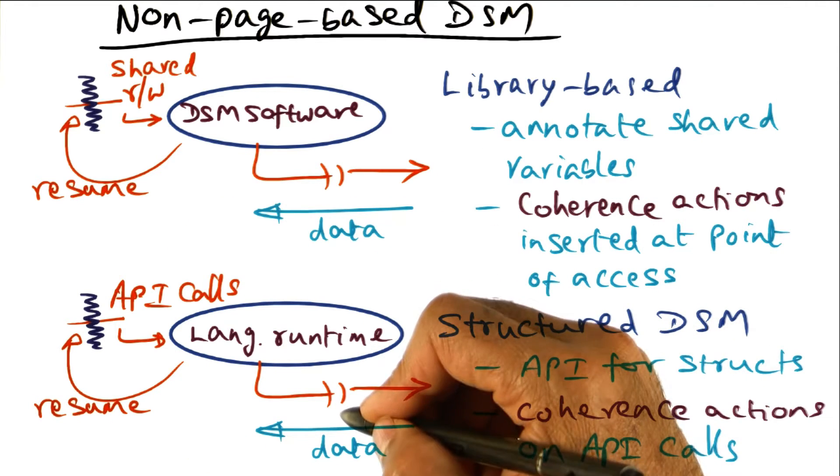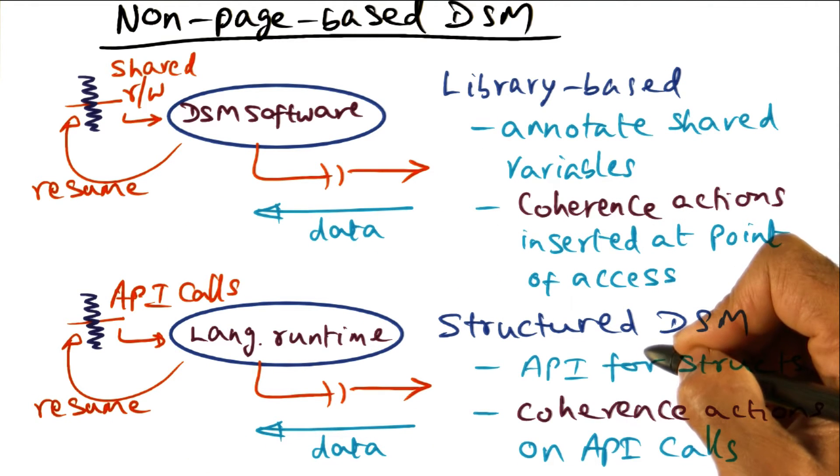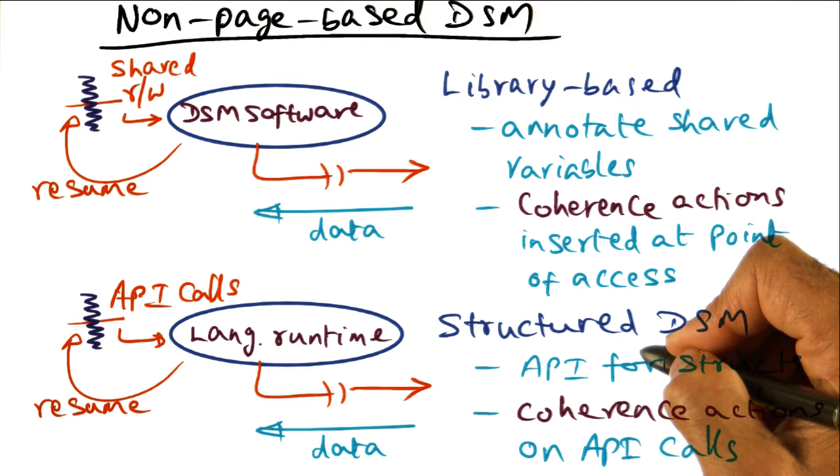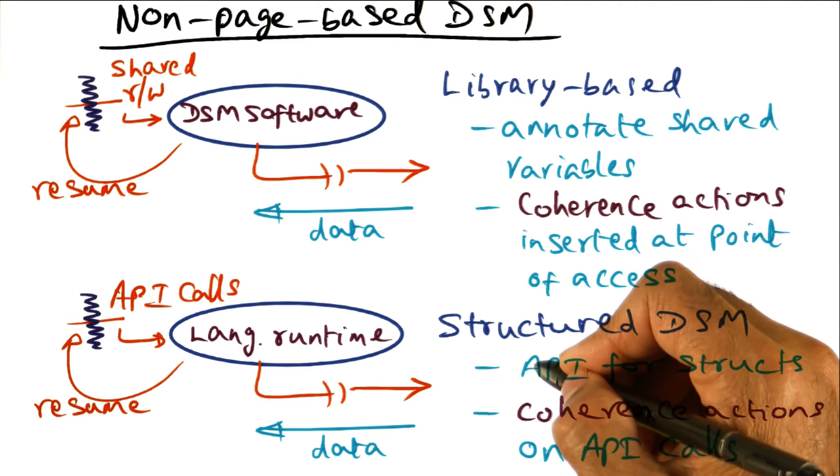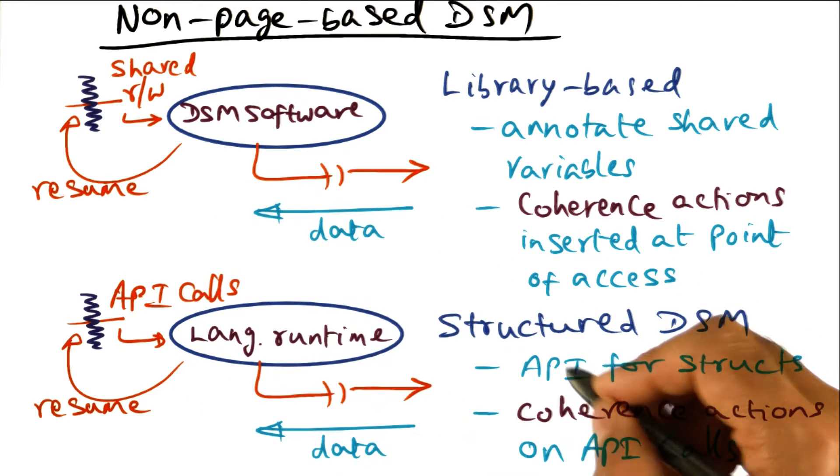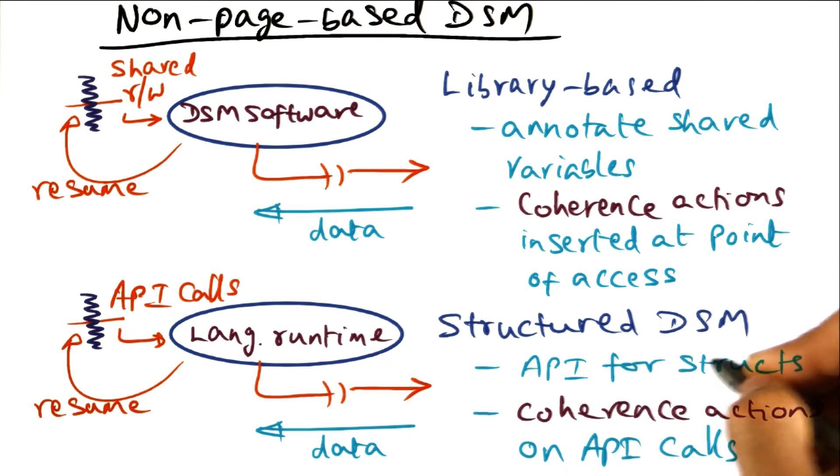Another approach to providing shared abstractions is not at the level of memory locations, but at the level of structures that are meaningful for an application. And this is what is called Structured DSM.